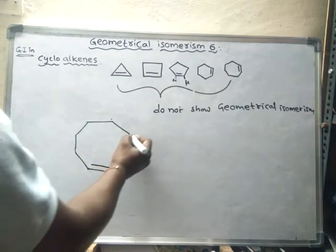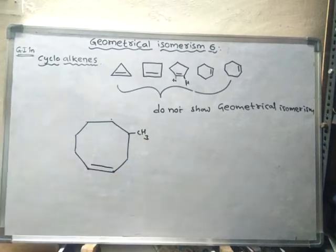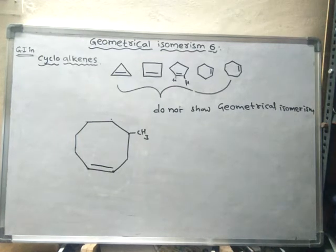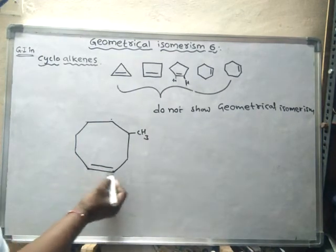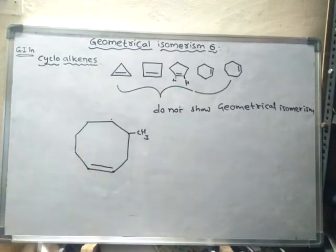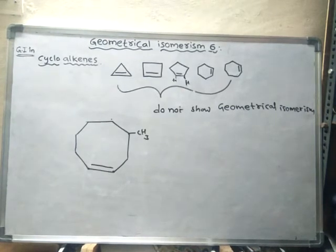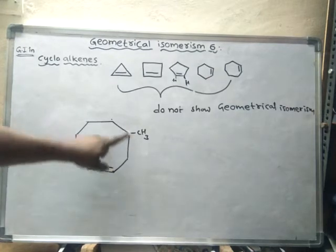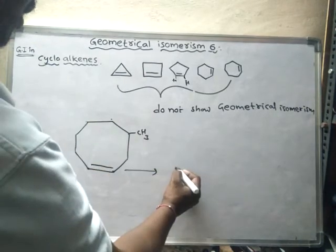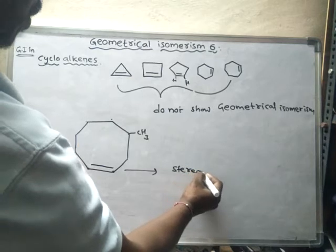Let us see one more example. Suppose a compound with a CH3 group attached. Will this compound show geometrical isomerism? Let us check whether it is a stereocenter or not. Here there is a cycloalkene with an eight-member ring.